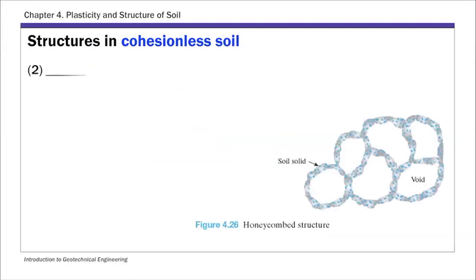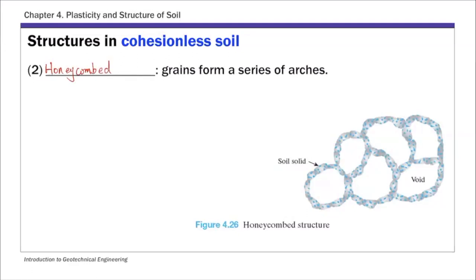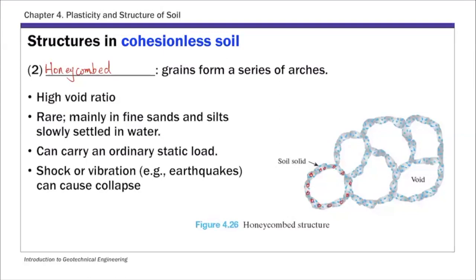The second type of structure for cohesionless soil is called a honeycomb structure. In contrast to the single grain type, soil grains form chains that create large voids — arteries with large void spaces in between. This type of structure features a very high void ratio. Honeycomb structure is rare, found mainly in fine sand and silts slowly settled in water. It can carry ordinary static loads but cannot carry shock or vibration; earthquakes or heavy loads can cause collapse and large settlement.